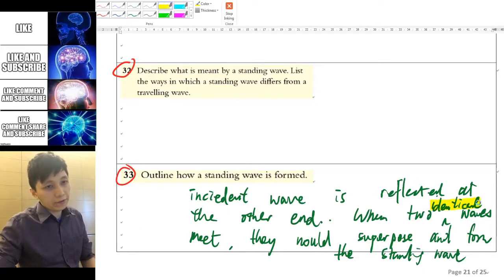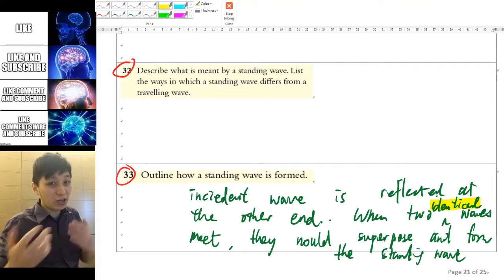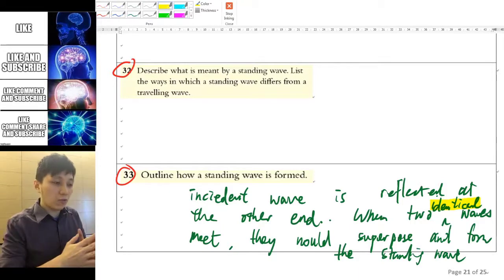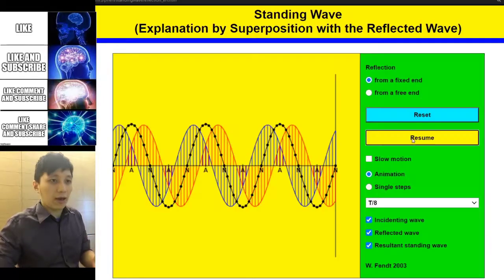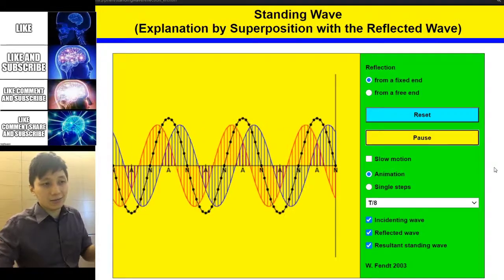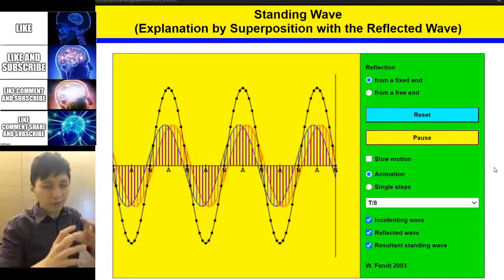However, there are two things that I would like to emphasize and I would need your attention. The first thing is the two waves have to be identical because they would need to have the same amplitude and also the frequency or wavelength as well. Think about this: if there are two waves that are not even the same shape, even though where they meet they will have superposition, you will not have such a nice formation of the sum as the standing wave.